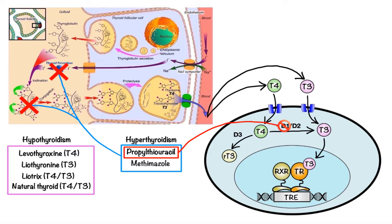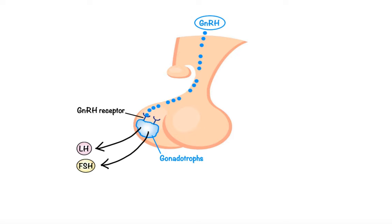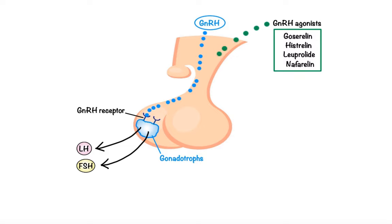Our next pharmacological target is the gonadotropin-releasing hormone receptor. The hypothalamic hormone GnRH is released and transported to the anterior pituitary in a pulsatile manner, where it binds to receptors expressed by pituitary gonadotrophs. Varying pulse frequencies regulate the secretion of LH and FSH. GnRH agonists such as goserelin, histrelin, leuprolide, and nafarelin are more potent and have a longer half-life than natural GnRH. They produce an initial stimulation of pituitary gonadotrophs resulting in increased secretion of LH and FSH, followed by down-regulation and inhibition of the pituitary-gonadal axis.